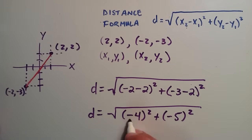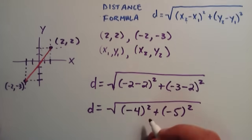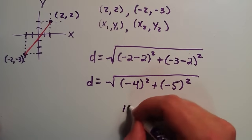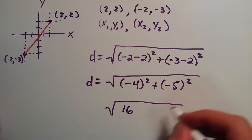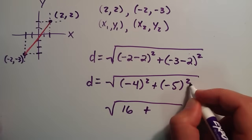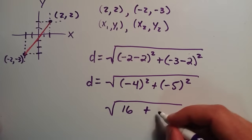And so now negative 4 squared is the same thing as negative 4 times negative 4, which is 16. And negative 5 squared is the same thing as negative 5 times negative 5, or 25.